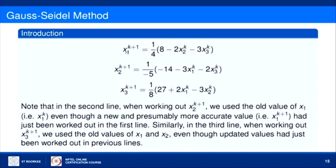In the Jacobi method, when calculating X_2 at iteration k+1, we used X_1 and X_3 values from iteration k. However, since we have already computed X_1 at iteration k+1, we have a more updated value available. Similarly, when calculating X_3, we already have updated values for X_1 and X_2 from iteration k+1. Instead of using old values, we can use these more updated values to achieve faster convergence — this is exactly what the Gauss-Seidel method does.